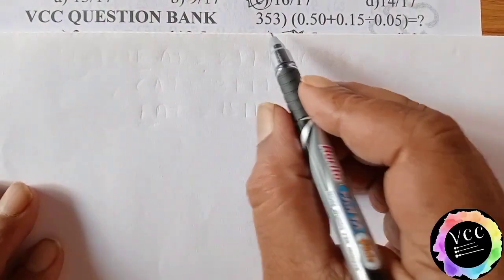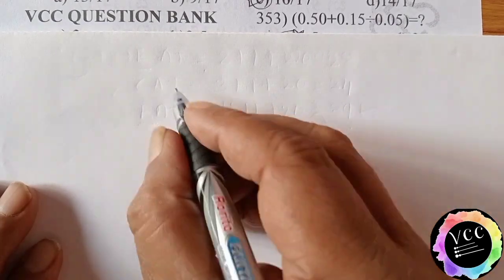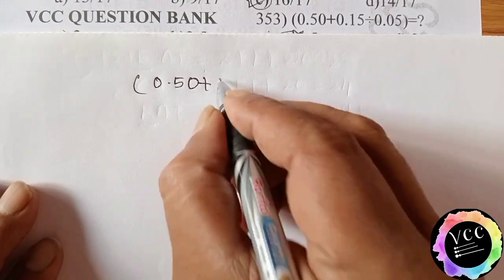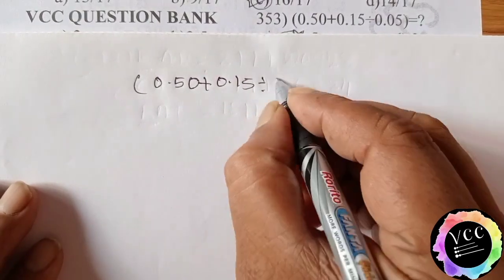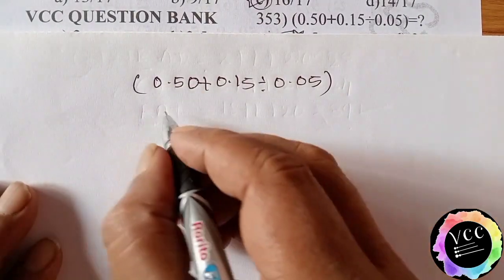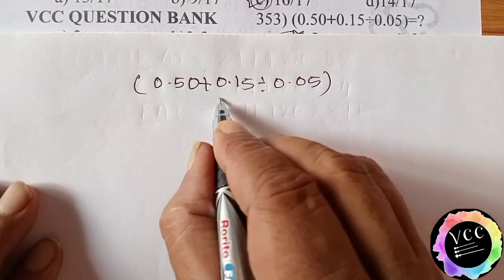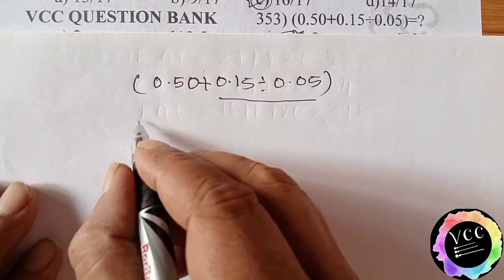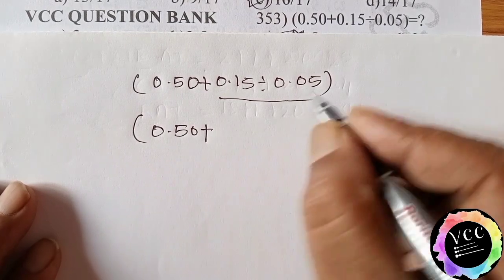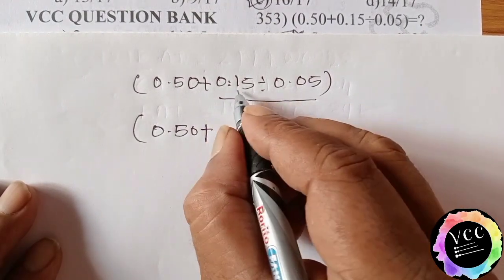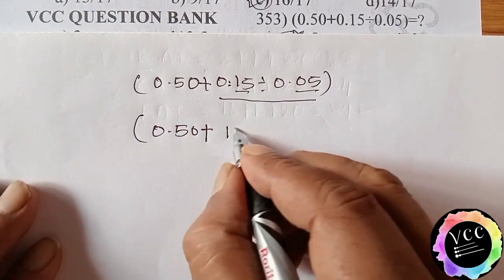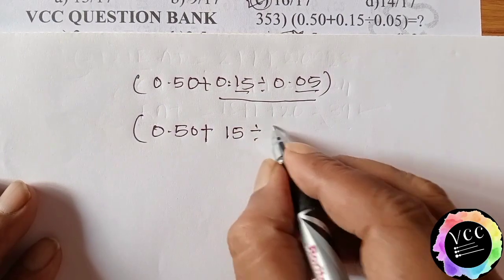VCC question bank 353. Here question is 0.50 plus 0.15 divide 0.05, small bracket closed both sides. Here first, according to the BODMAS rule, first division should be done here in the simplification. 0.50 plus, here when after the decimal point, here 2 digits means decimal will disappear, means 15 divide 5.